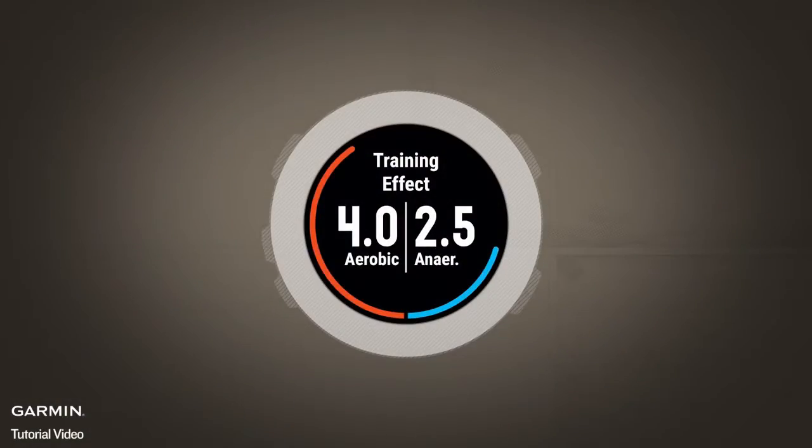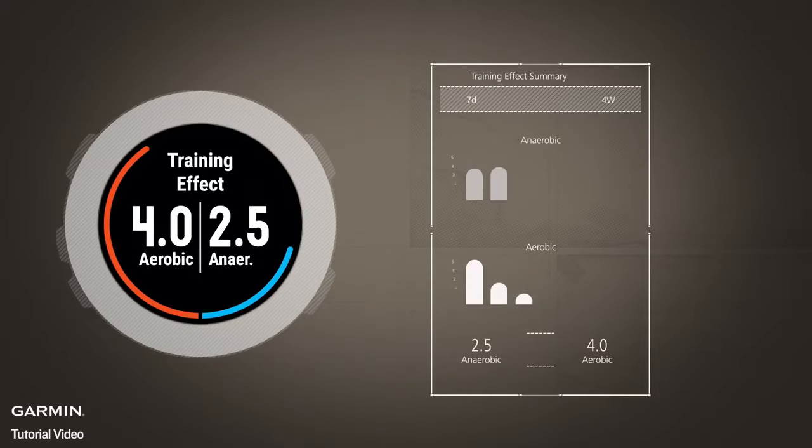On compatible products, aerobic training effect is shown on the left side of the training effect screen. Values range from 0 to 5, with 0 being no effect and 5 being overreaching. You can also view this information on Garmin Connect, along with new graphs that display your training effect history.